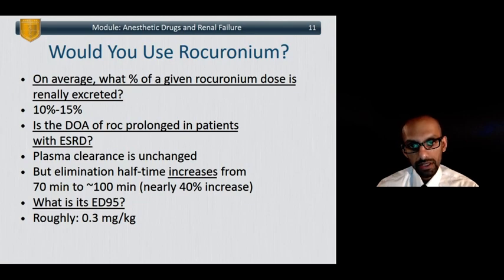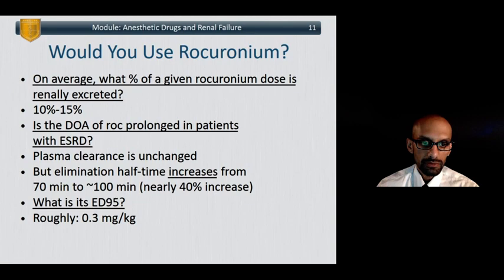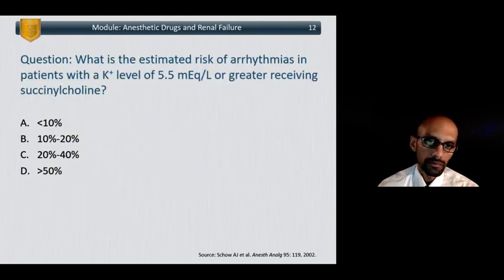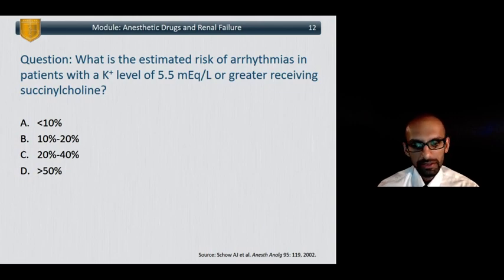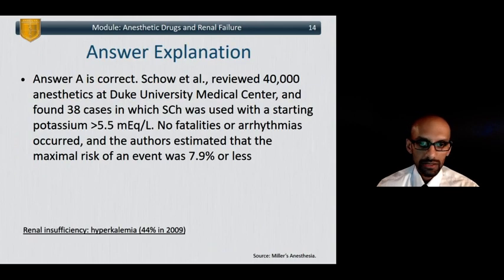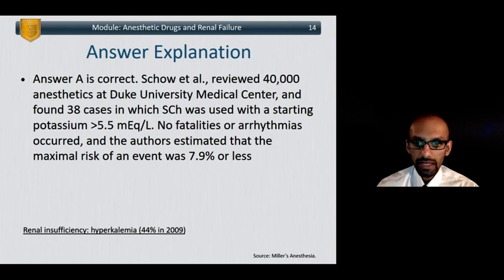About 10–15%, and up to perhaps 30% depending on the textbook, of rocuronium is renally excreted. The duration of action of rocuronium can be prolonged to a mild degree — maybe 20–40%. Its ED95 is also 0.3 mg/kg. Regarding the estimated risk of arrhythmias in patients with a potassium level of 5.5 or greater receiving succinylcholine — the ABA actually asked this question — the answer is around 8%. A Duke study used succinylcholine in patients with K greater than 5.5, found no fatalities, and the overall arrhythmia risk was about 8%.